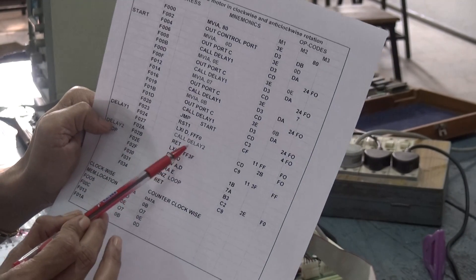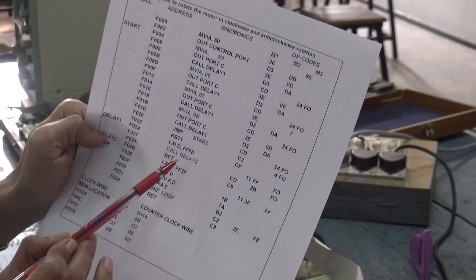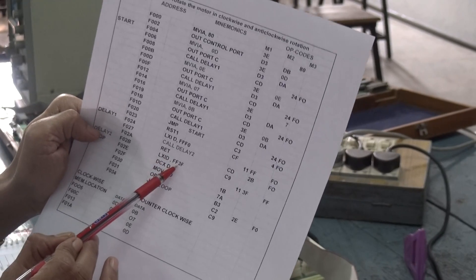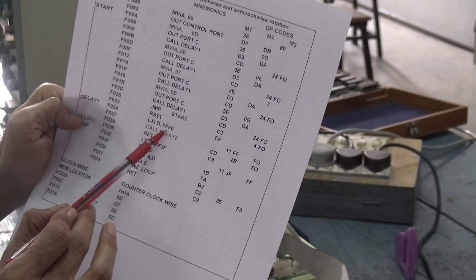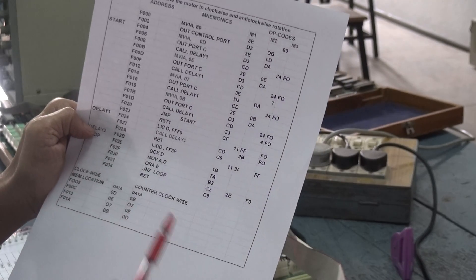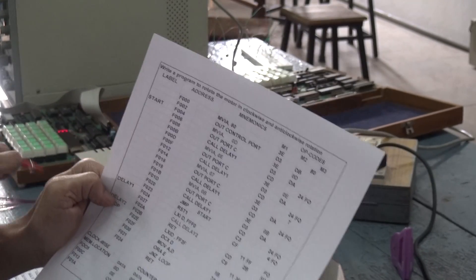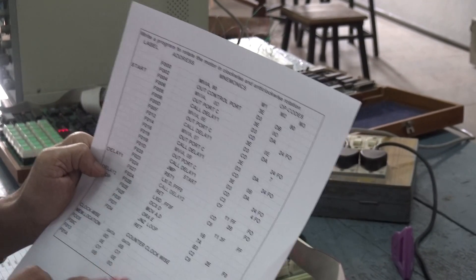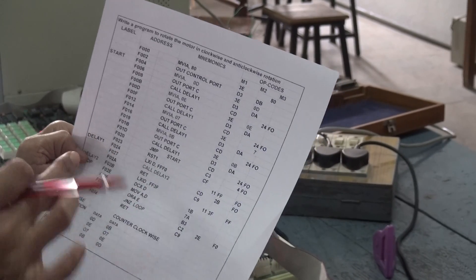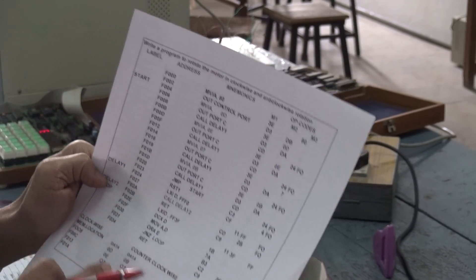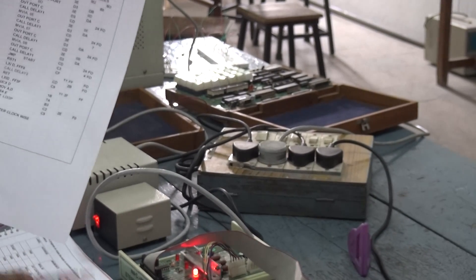Delay 2 is located here. We are using a register pair here to improve and to increase the delay and this delay will be multiplied by the number what we are feeding here. This is only to see a perceivable change in the motor rotation. We are increasing the delay and we are keeping the delays one inside the other as a nested delay.